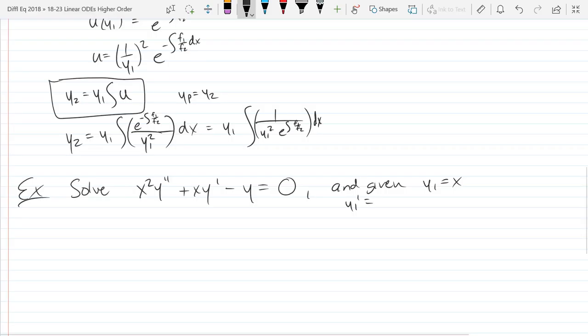Let's check real fast to make sure this is a solution. y1 prime is 1, y1 double prime is 0. That's x squared times 0 plus x times 1 minus y, which is x. That does cancel out to 0. We got a non-trivial solution.